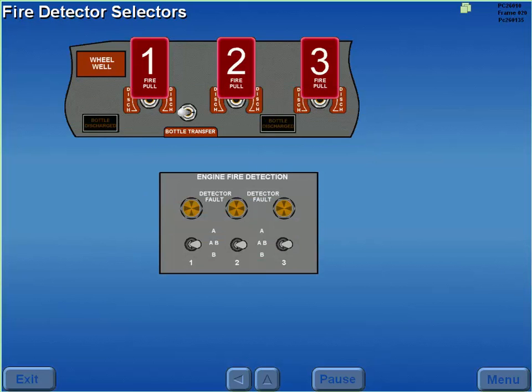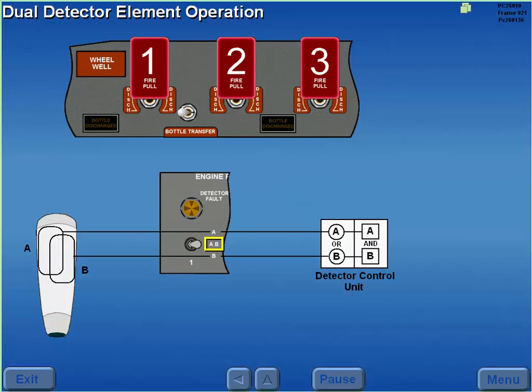The selection of each engine's A and B detector elements is controlled by the respective fire detector selector. With the selector in the normal A-B position, concurrent signals from both detector elements are required to initiate a fire warning.